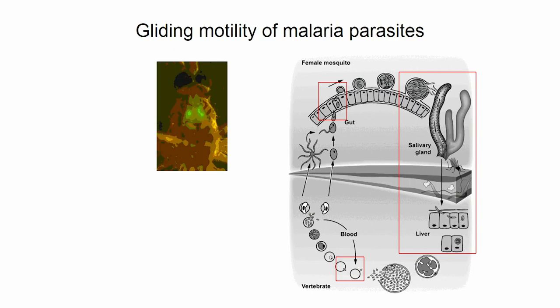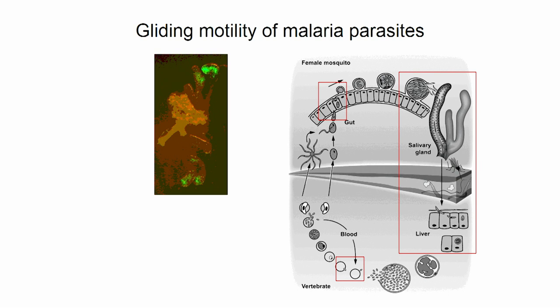You can kind of see here, and you can take out these salivary glands. This mosquito has about 5,000 parasites sitting in the salivary gland. And when you isolate the parasites, they do something extremely curious — they are slightly curved cells.